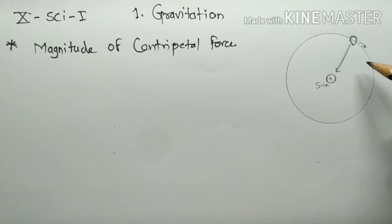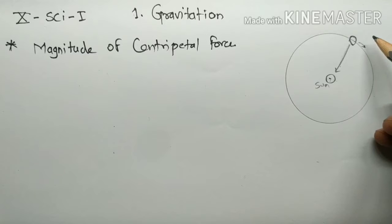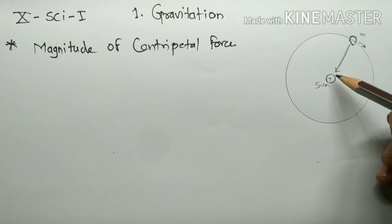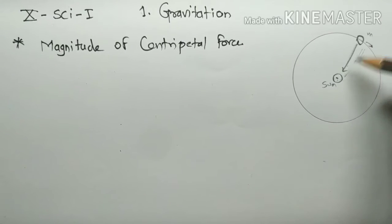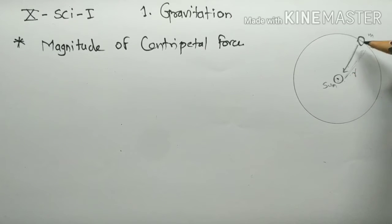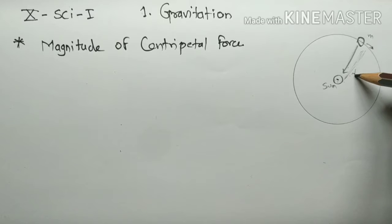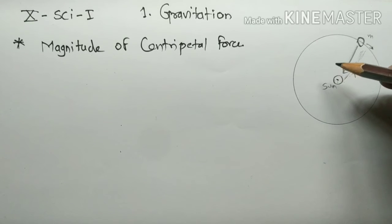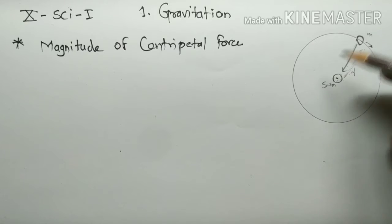If m is the mass of the object, v is the speed, and r is the radius — this is r, the radius of the circle. We also noted that r represents the distance of the planet from the sun in previous topics, but here, according to the magnitude of centripetal force, r is the radius of the circle.